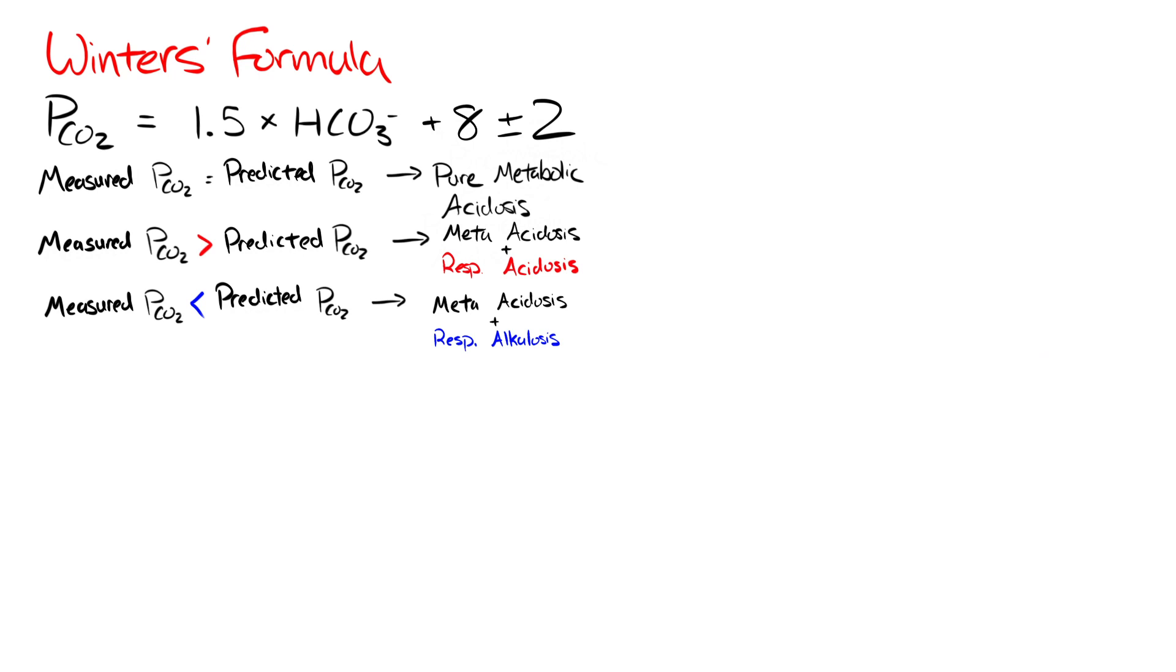Let's do another example. We have an established metabolic acidosis. In this case, we have a PCO2 of 38 and a bicarb of 16. We plug 16 in the formula.